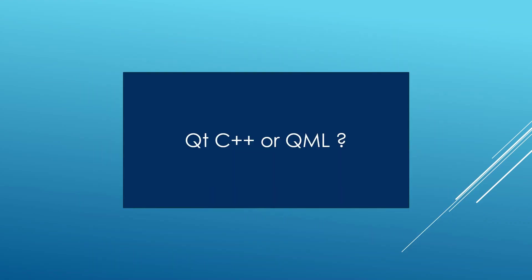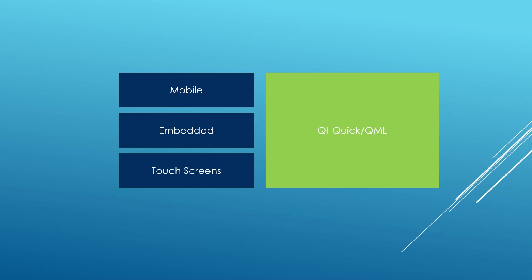Now that you have an idea about Qt Widgets and QML, and know there is a whole goldmine of C++ components on the C++ side of Qt — which one do you use? Well, if you are targeting mobile or embedded, you should use Qt Quick and QML because they have many ready-made components to put together user interfaces quickly, and they will look slick on Android, iOS and embedded devices.